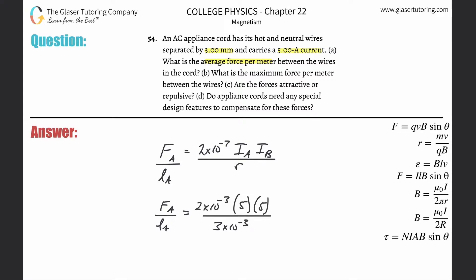So it's going to be 2 times 10 to the minus 3, oh excuse me, minus 7th. What am I talking about? How did that get to a 3 when it's clearly a 7 up there? 2 times 10 to the minus 7th multiplied by 5 times 5 divided by 3 times 10 to the minus 3. So this works out to be the force per length is going to be 1.67 times 10 to the minus 3 newtons per meter. So that takes care of that one.